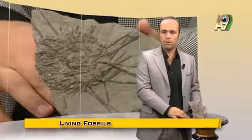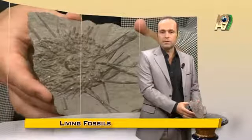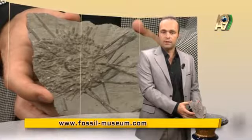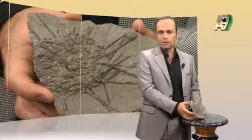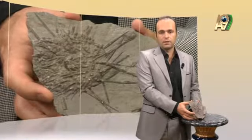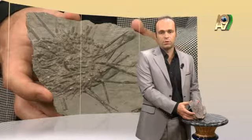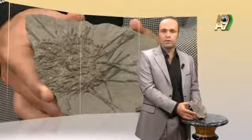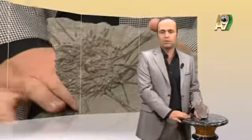To summarize, we see that living things have never changed, neither in terms of DNA nor of phenotypes, and that evolution never happened. This 354-million-year-old sea urchin is a typical example of this.